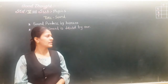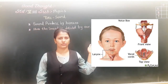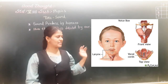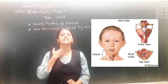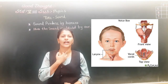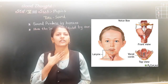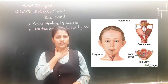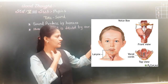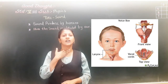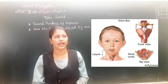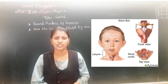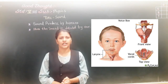Now, see this diagram of how the sound is produced. This is called a voice box, located above the wind pipe. This box is called the voice box, and it is also called the larynx.